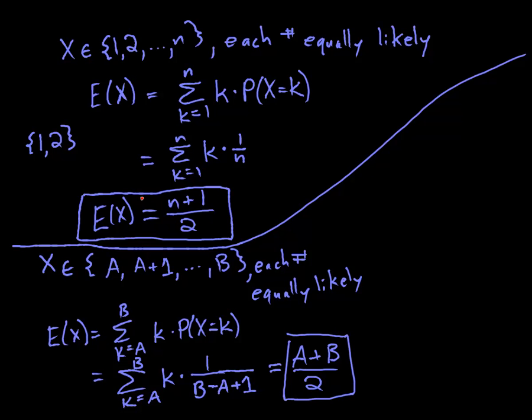So the expectation that we found up here is actually a special case. Because in that case, B is n and A is 1. And the order got switched a little bit. In either case, notice that the expectation for a uniform discrete random variable is just the average of the possible values. It's very clear from there: A plus B over 2, that's what you do when you compute an average.